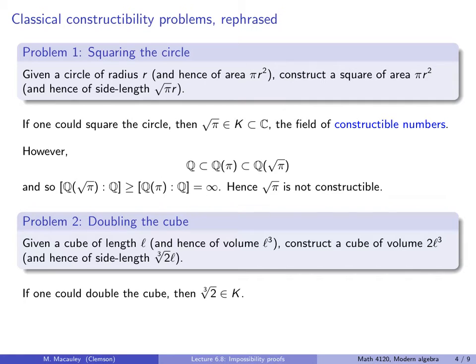If one could double the cube, then the cube root of 2 would be constructible. However, we've seen that q adjoined the cube root of 2 is a degree 3 extension over q, and 3 is not a power of 2. Hence the cube root of 2 is not constructible, so the cube cannot be doubled. It really is that simple.